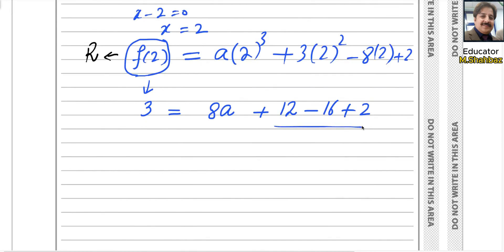Find these numbers. We will get 3 equals 8a plus 12 minus 16 plus 2. Here, 12 minus 16 is minus 4. Minus 4 plus 2 is negative 2.